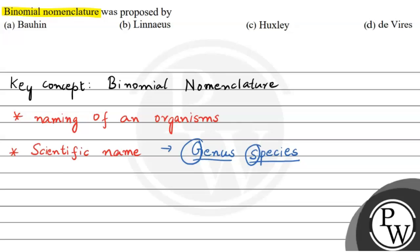This method of naming an organism was first given by Karl Linnaeus. Karl Linnaeus, the father of taxonomy, was the first person to propose binomial nomenclature for the naming of organisms.